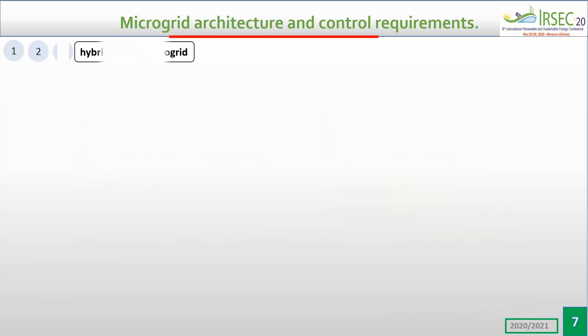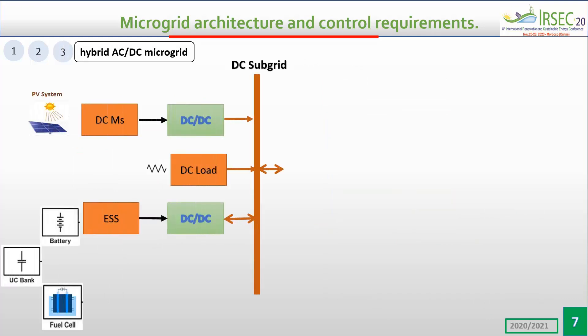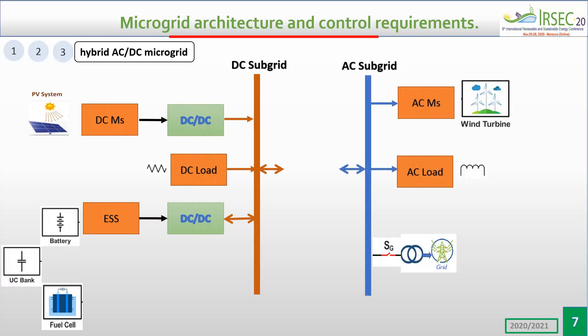A typical hybrid AC/DC microgrid usually consists of a DC sub-grid and an AC sub-grid, which are interlinked through a bidirectional power converter. The AC/DC microgrid can leverage the advantages of both AC and DC microgrids. Specifically, it can support both AC and DC loads without any unnecessary power conversion.